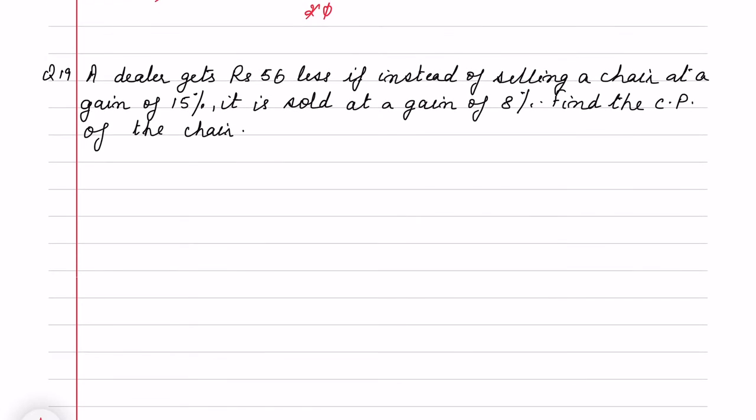Same way in the second question, you can do it very quickly. A dealer gets 56 rupees less if instead of selling a chair at a gain of 15%, it is sold at a gain of 8%. If cost price is 100, then gain of 15% means selling price is 115.